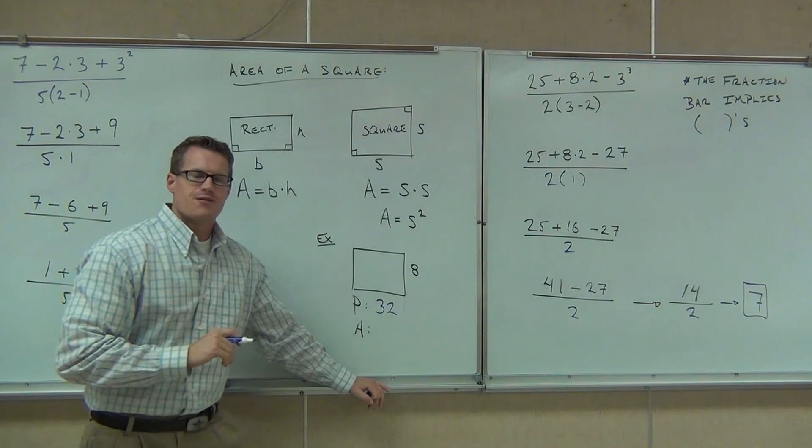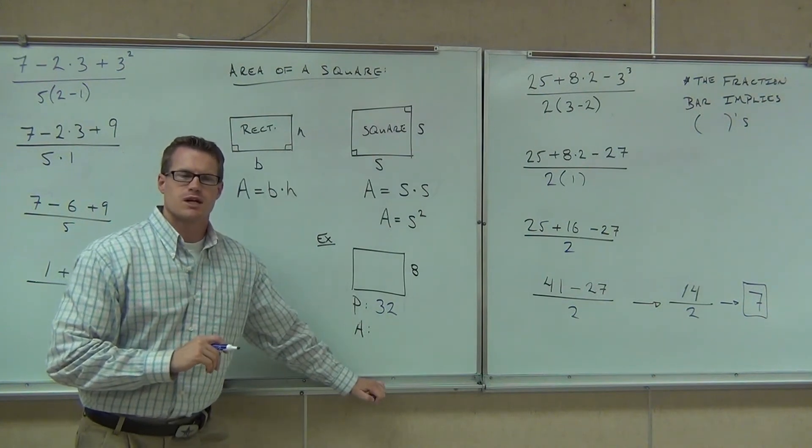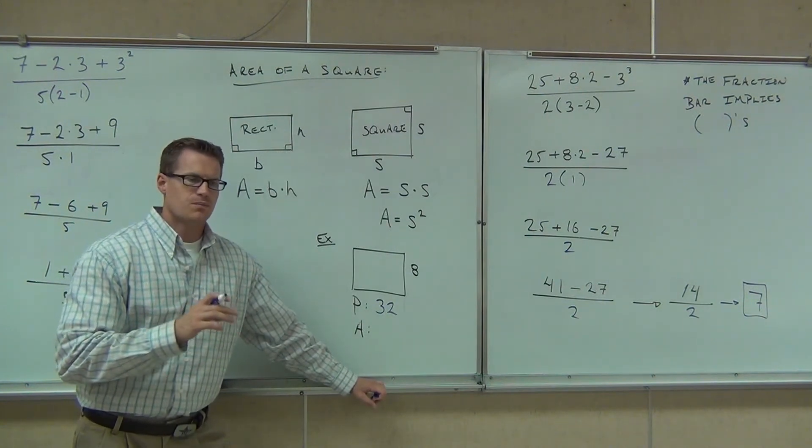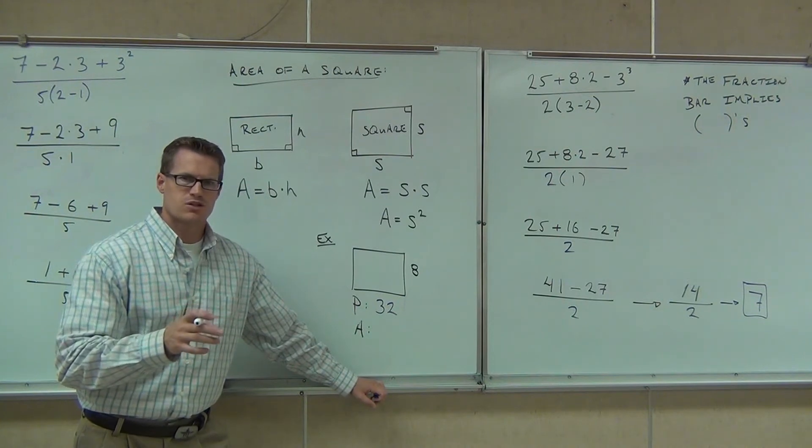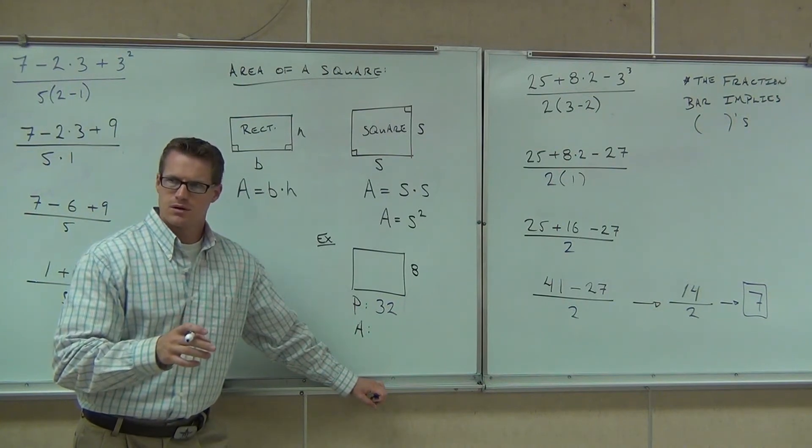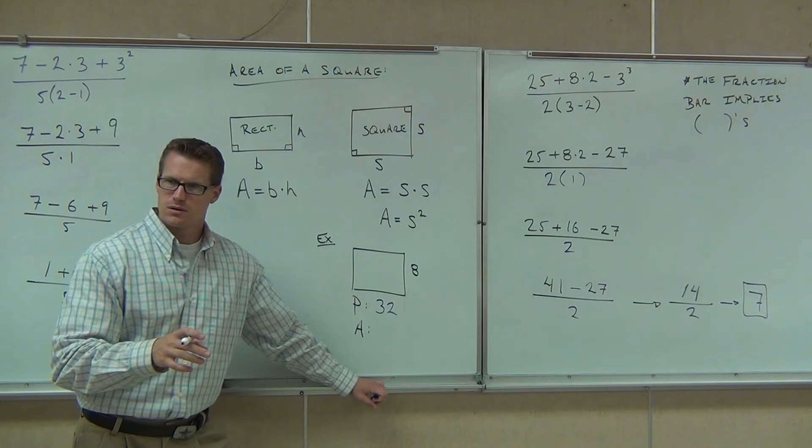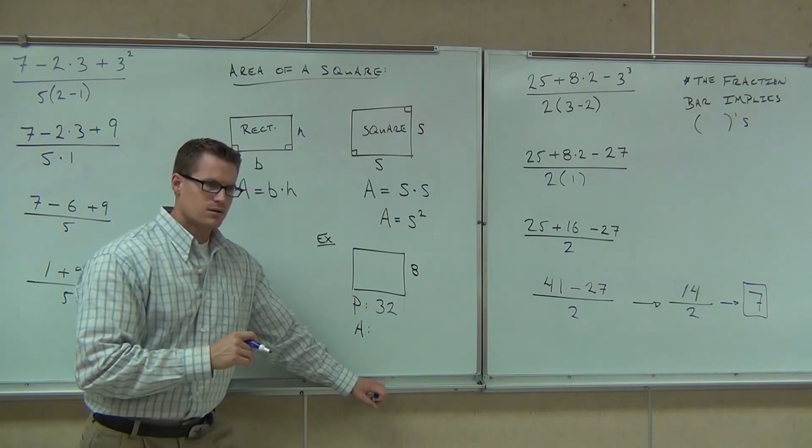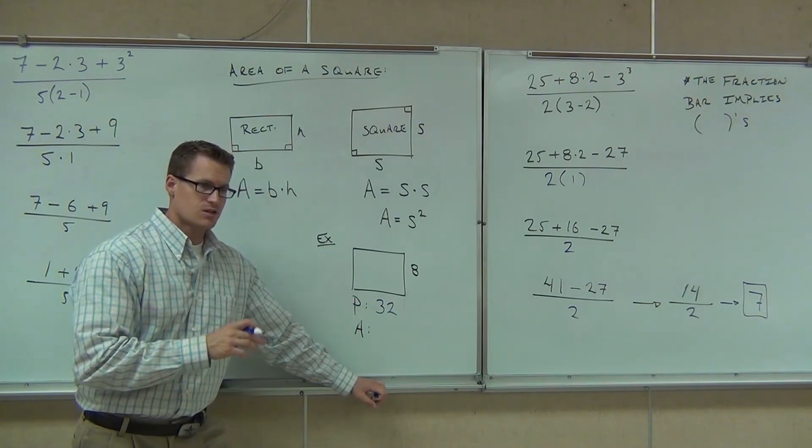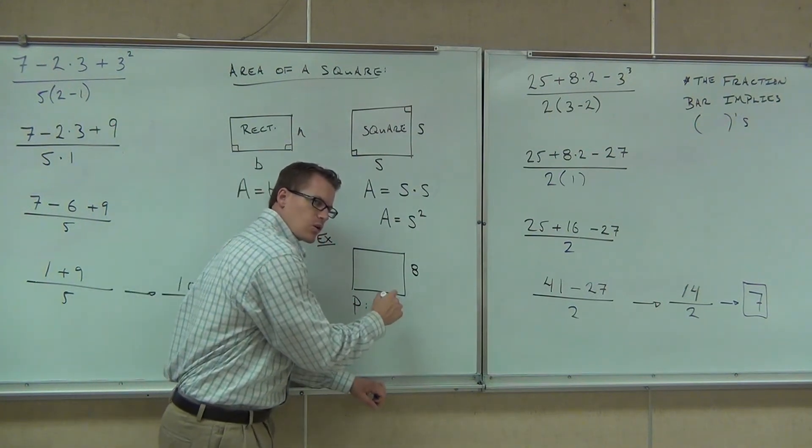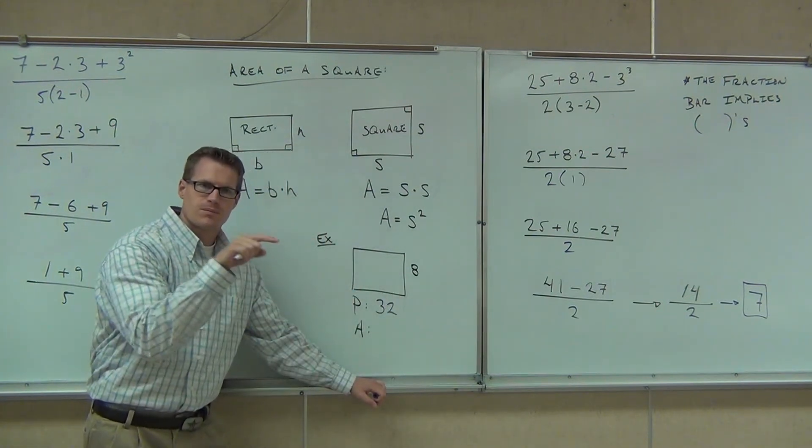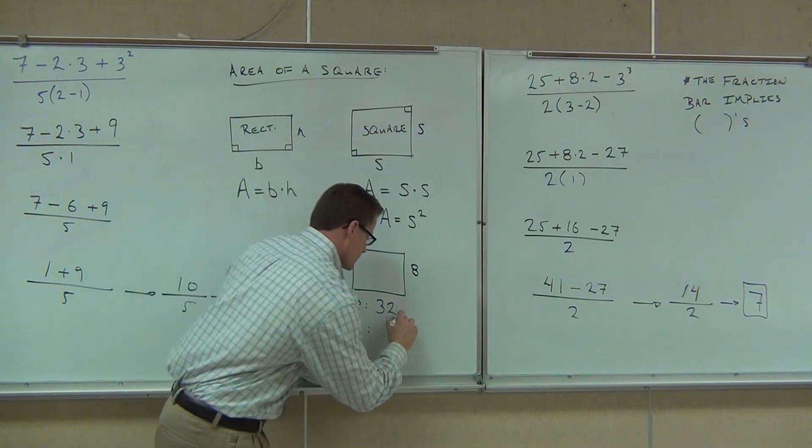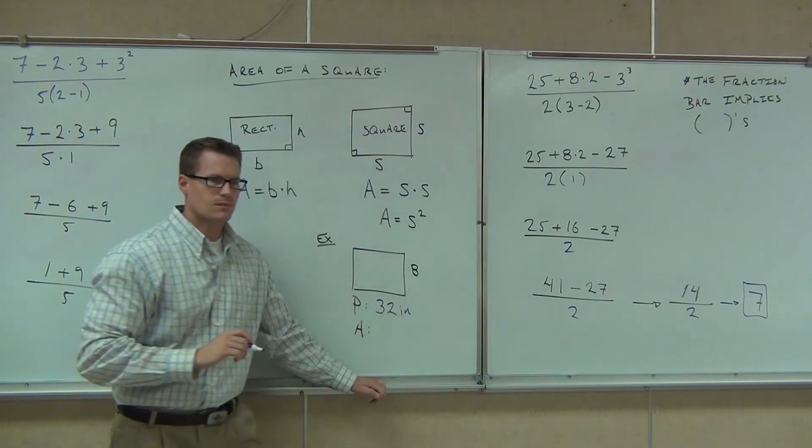Now, if I'm talking about perimeter, please pay attention up here for a second. If I'm talking about perimeter, should I say thirty-two inches or thirty-two square inches for perimeter? Just inches. Because square inches would be everything inside, right?